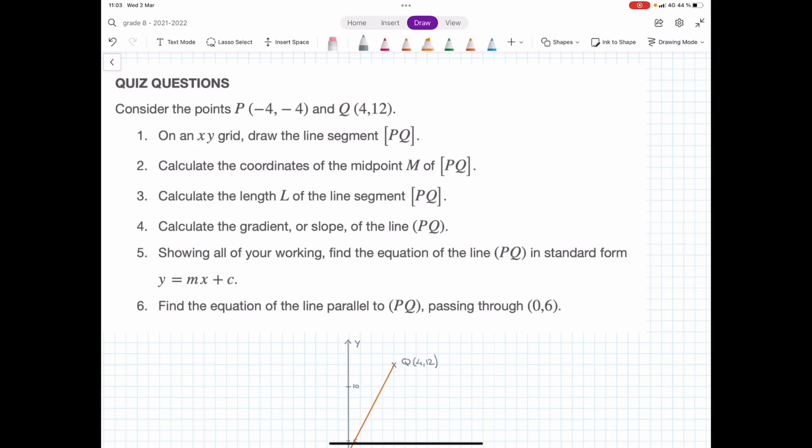Okay everyone, so here's the deal. You have two points, P with coordinates negative 4, negative 4, and Q with coordinates 4, 12. And the first thing we have to do is, on an XY grid, draw the line segment PQ. Quick reminder, you know that you're dealing with a line segment because of these square brackets around the letters P and Q. The fact that it's a segment means it has a beginning and an end. Are we clear with that? Endpoints P and Q.